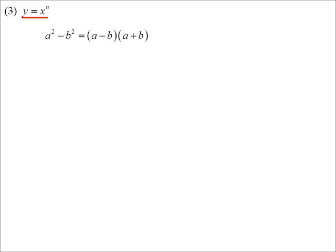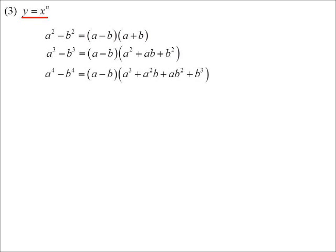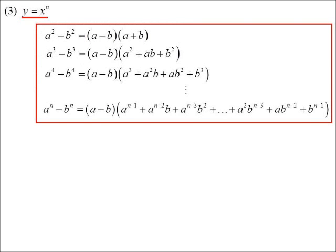Let's look at polynomials in general. To do this, I need to remind you of something. Back when we looked at difference of two squares and difference of two cubes, we generalised that idea. The pattern continues: if I have a^n minus b^n, it will always start with (a − b). Powers of a go down by 1, powers of b go up by 1, so the two powers always add up to n − 1.